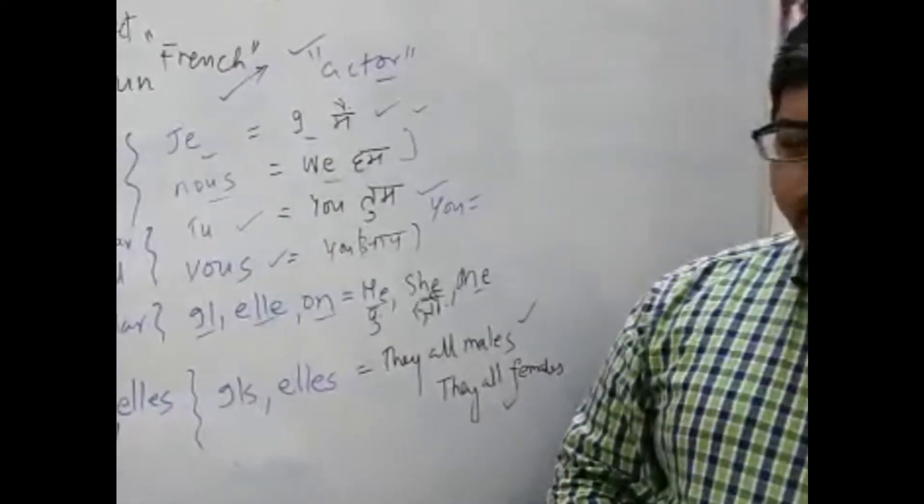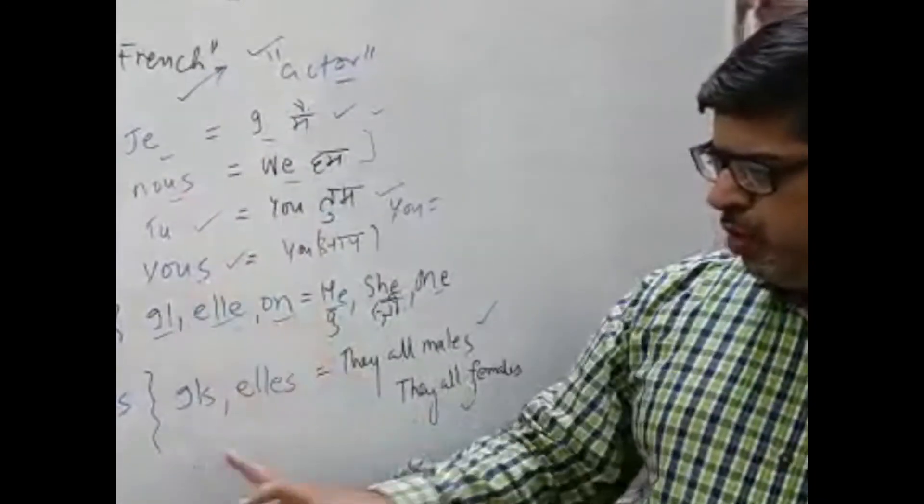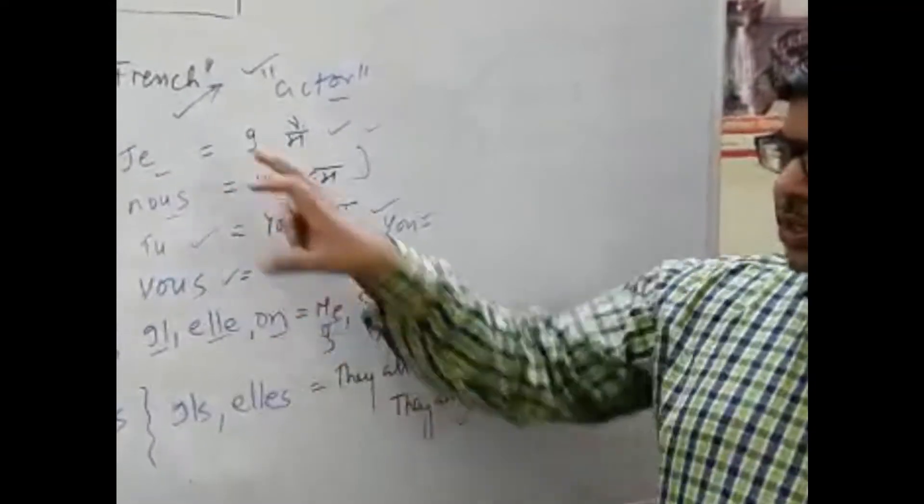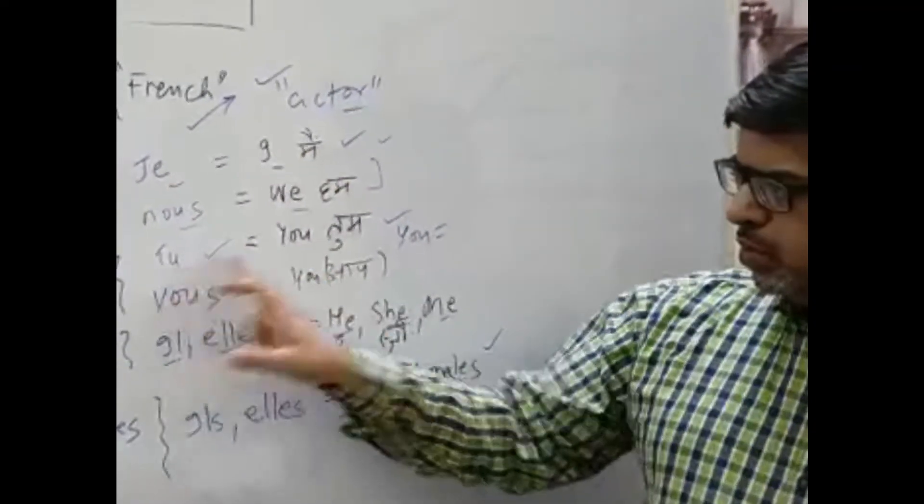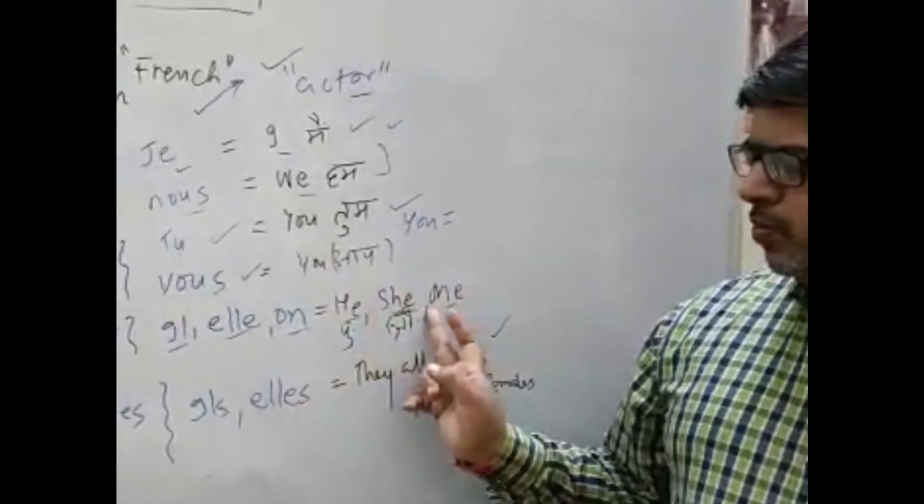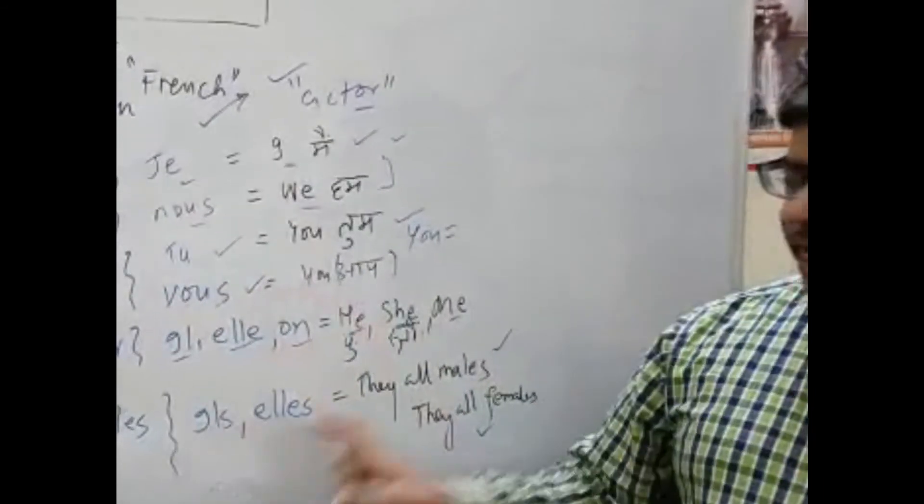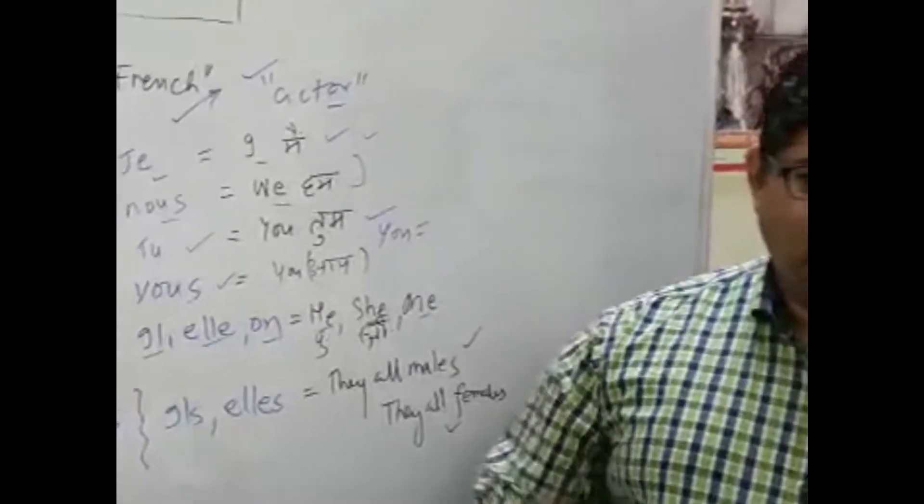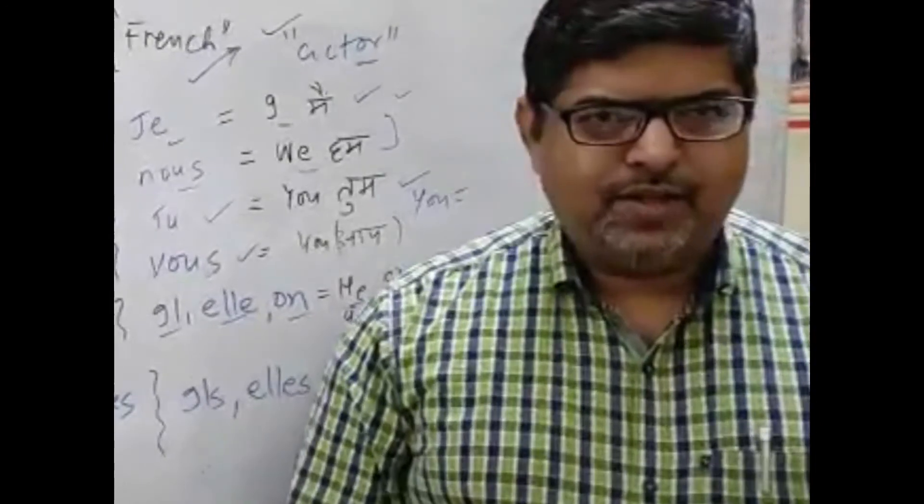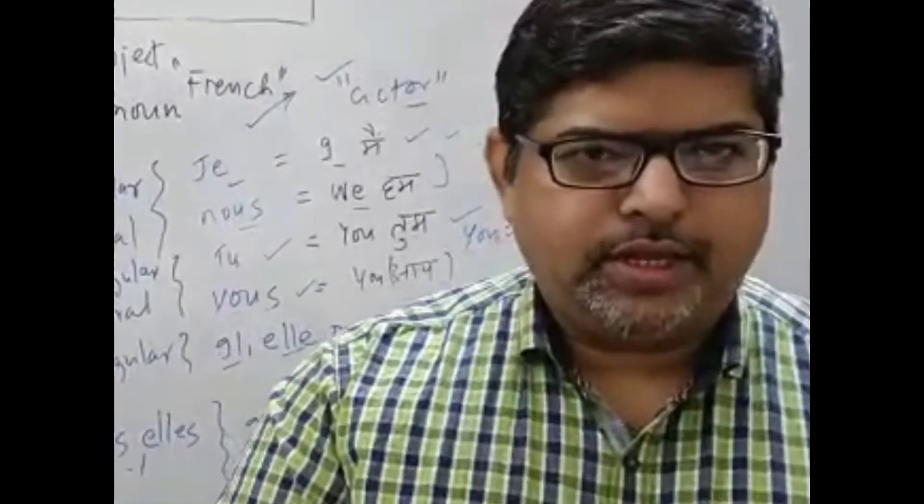So with this, we are concluding that subject pronouns in French will be called as je, tu, il, elle, on, nous, vous, ils, elles. I, you, he, she, one, we, you, ils, elles. They, all males or they, all females. See you in the next session with a lot of other things which are related to French. Till then.